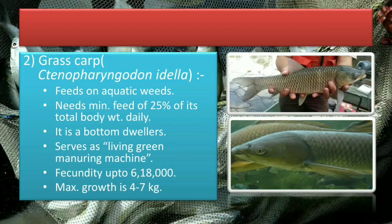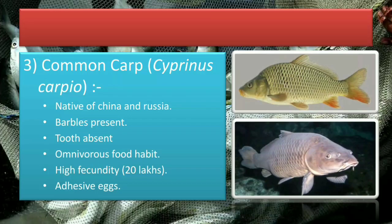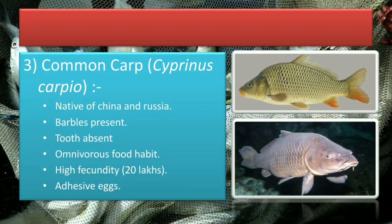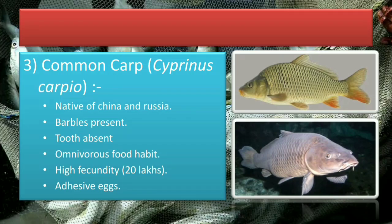Third exotic carp is common carp. It is native to China and Russia. It has barbels — you can see barbels in the diagram on the lower position — whereas silver carp and grass carp have no barbels. Its teeth are absent. It has high fecundity of up to 20 lakh and has adhesive eggs.